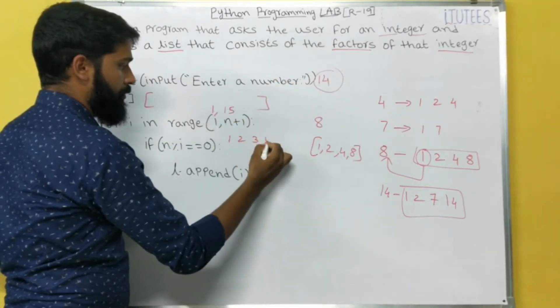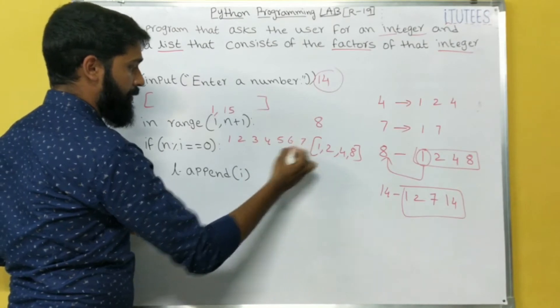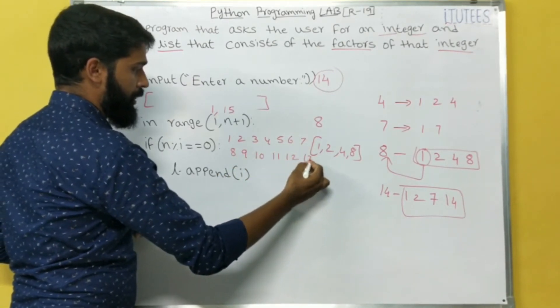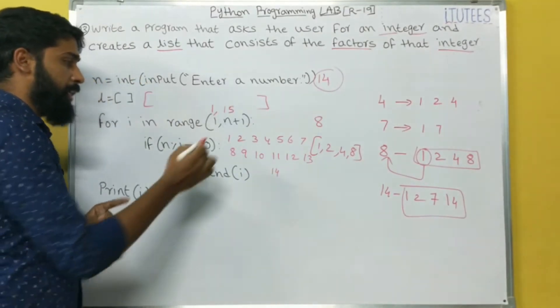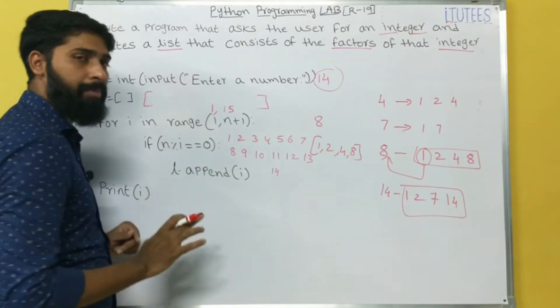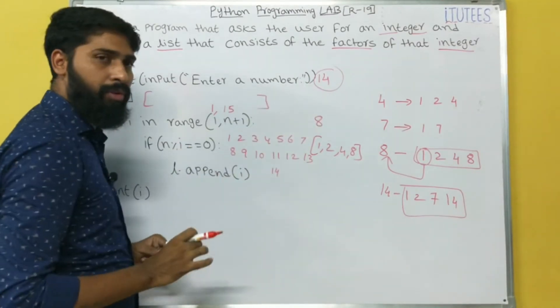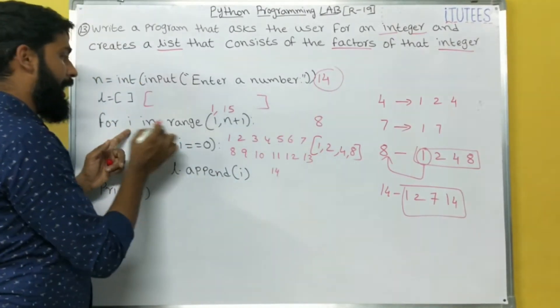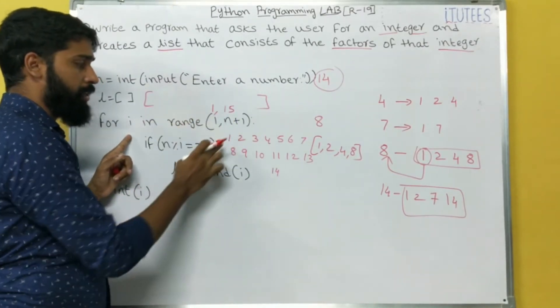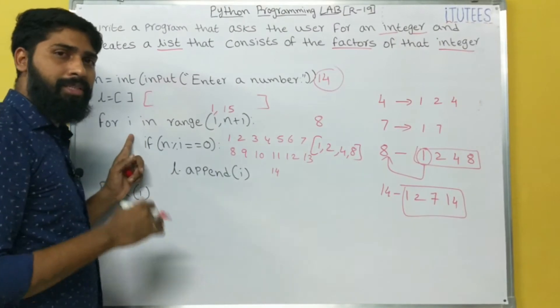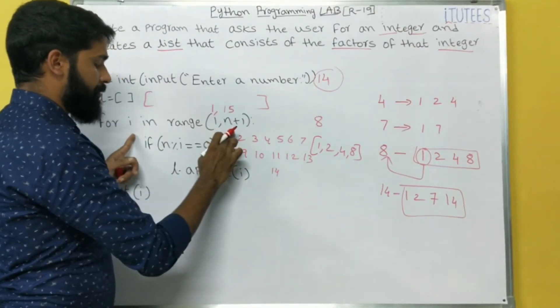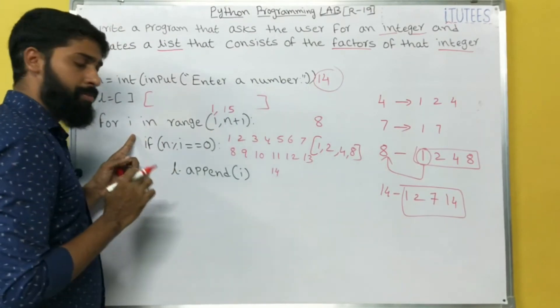That means you are going to divide this 14 with all these numbers: 1, 2, 3, 4, 5, 6, 7, 8, 9, 10, 11, 12, 13, 14. That means if 14 is divisible by these numbers, then we say that the number is a factor for 14. So now we can check that. So for i in range of 1, comma 15. That means the first one is 1. Every number is divisible by 1 and itself. So we can start from 1.